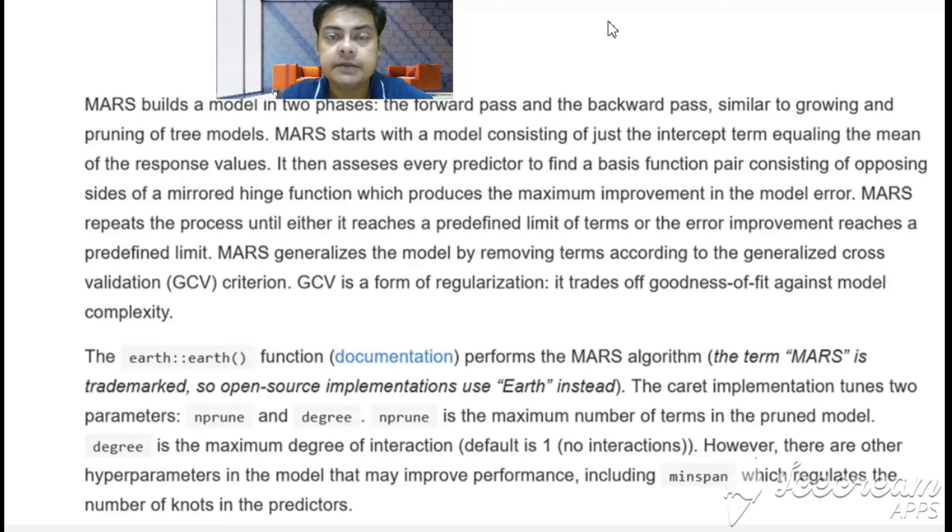MARS builds a model in two phases: the forward pass and the backward pass, as I was talking about—input to output is forward pass, output to input is backward pass, similar to growing and pruning of tree models. MARS is an extension of CART (Classification and Regression Tree), so obviously pruning is very important. Pruning is cutting off the unnecessary stuff in the model.